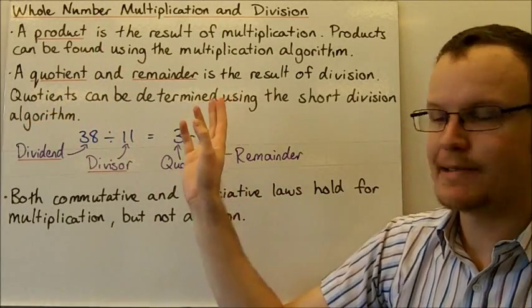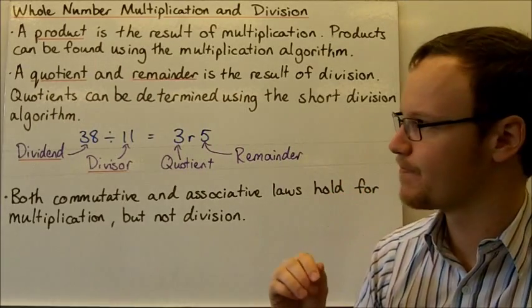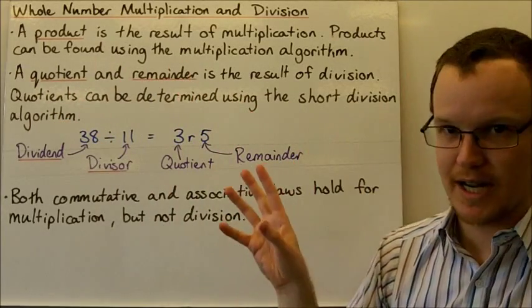A quotient and remainder is the result of division. Quotients can be determined using the short division algorithm.